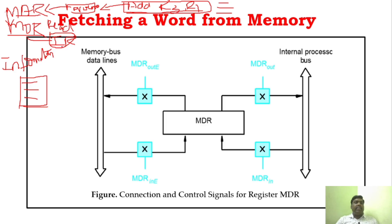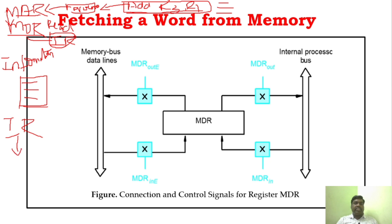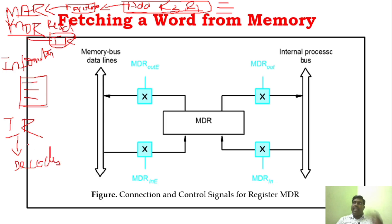Whatever instruction is in the IR will be executed. IR — instruction register — holds information about the current instruction being executed. In single bus architecture, the IR is connected with the instruction decoder, so whatever information is in the IR will be decoded and then execution will start.